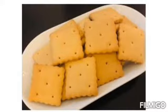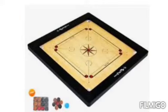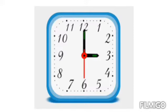Let's see some pictures. Mama gave me biscuits. Look at this shape. It's a square shape. Look at my carom board. I love to play carom board and it is in square shape. Clock. What is this? Clock. And it is also in square.